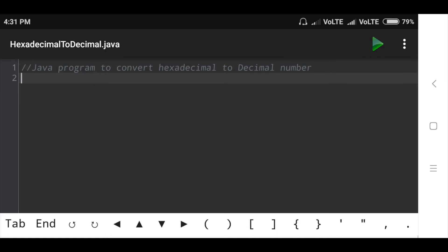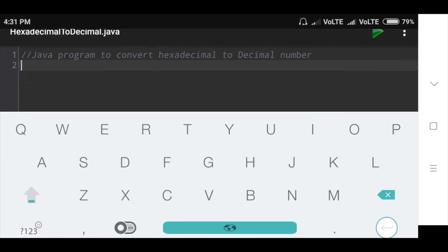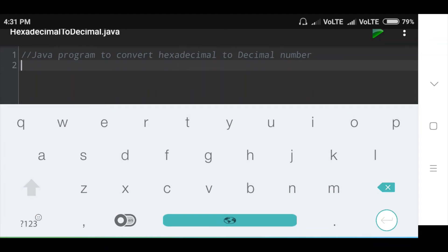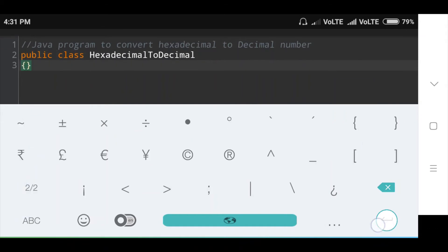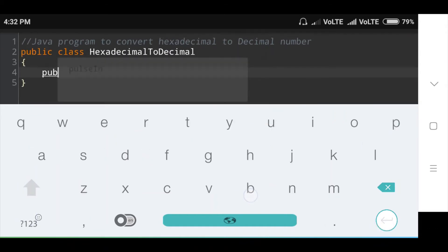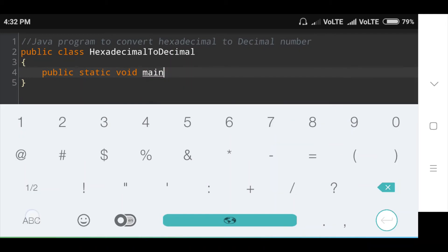First of all, I will create public class HexadecimalToDecimal. Inside this class, I will create main method: public static void main(String args[]).